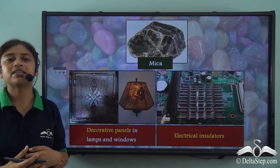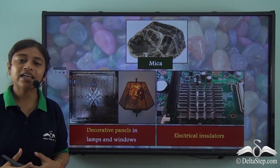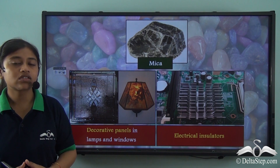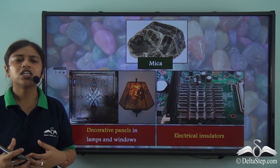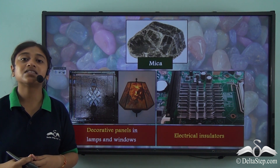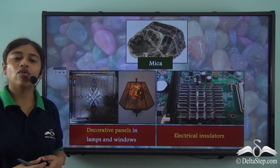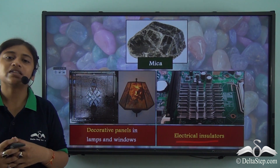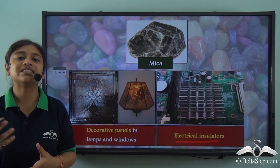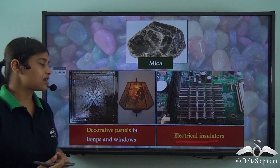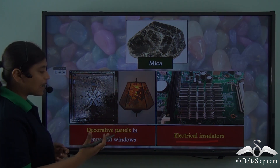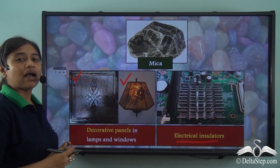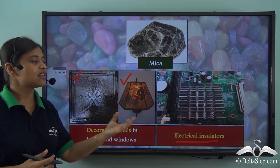Now let us come to another non-metallic mineral — mica. Mica does not contain any magnetic properties and it is neither a good conductor of heat and electricity — it is a poor conductor. Therefore it acts as a good insulator, and mica is widely used in electrical appliances as an insulator to protect from fire or to prevent damage in short-circuiting incidents. Mica is also used in decorative panels, both in windows and in lamps.